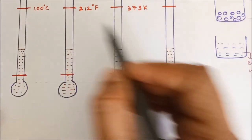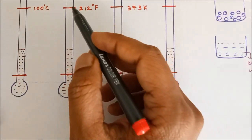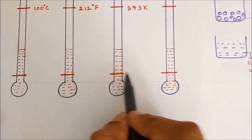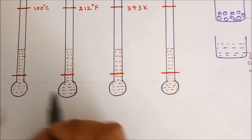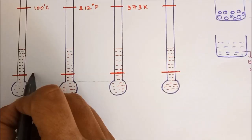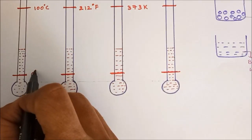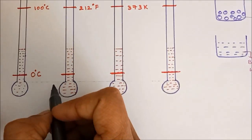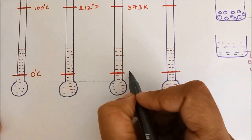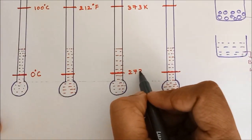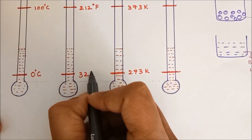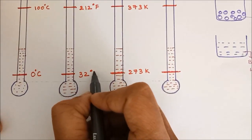In all other containers also, the mercury level fell down and these are the final levels of the mercury. This temperature reading was given 0 degree Celsius by Celsius, 273 Kelvin by Kelvin, and 32 degree Fahrenheit by Fahrenheit.